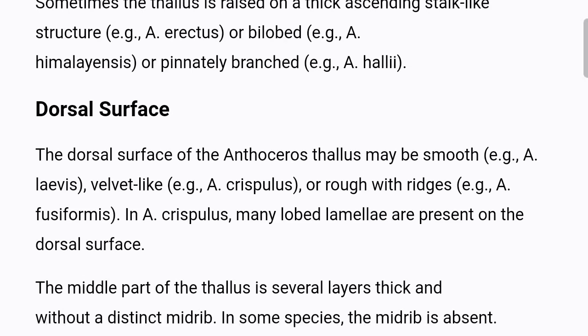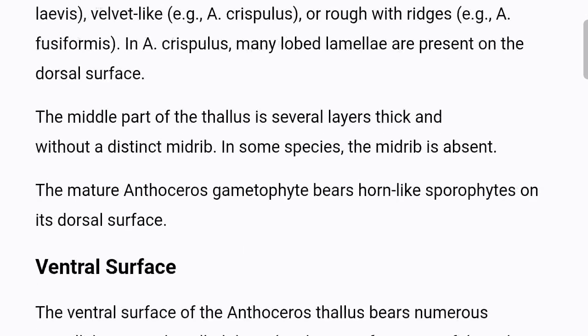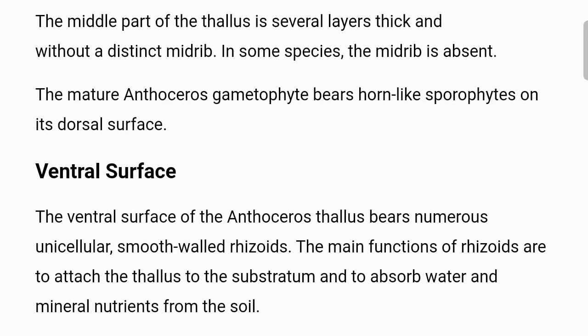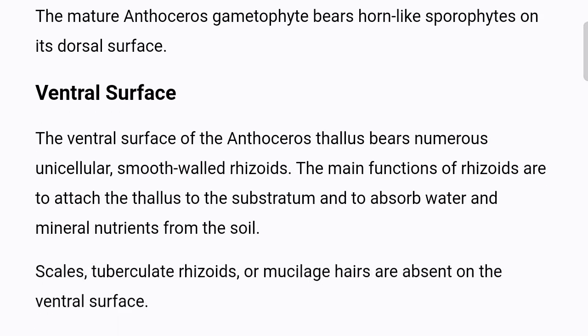The dorsal surface of the Anthoceros thallus may be smooth, e.g. Anthoceros lavis, velvet-like, e.g. Anthoceros crispulus, or rough with ridges, e.g. Anthoceros fusiformis. In Anthoceros crispulus, many lobed lamellae are present on the dorsal surface. The middle part of the thallus is several layers thick and without a distinct midrib; in some species, the midrib is absent. The mature Anthoceros gametophyte bears horn-like sporophytes on its dorsal surface.